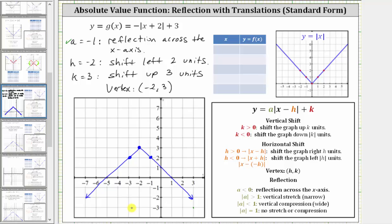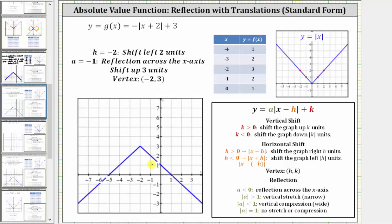You can always verify the graph by completing a table of values. Start with the x value of the vertex, which is negative two, in the middle of the table, then select two values less than negative two and two values greater: negative four, negative three, negative two, negative one, and zero. When x is negative four, y is one. When x is negative three, y is two. When x is negative two, y is three. When x is negative one, y is two. And when x is zero, y is one. All these points are on our graph, verifying it is correct. You can also check your work using graphing software, which confirms our answer.